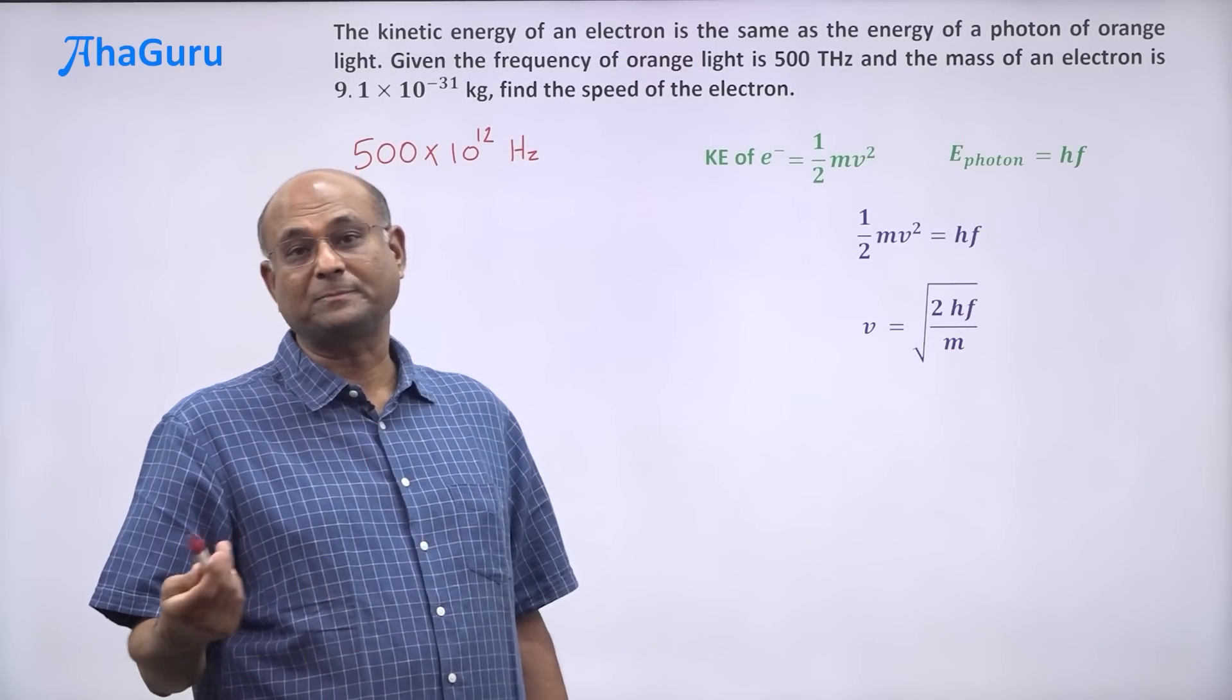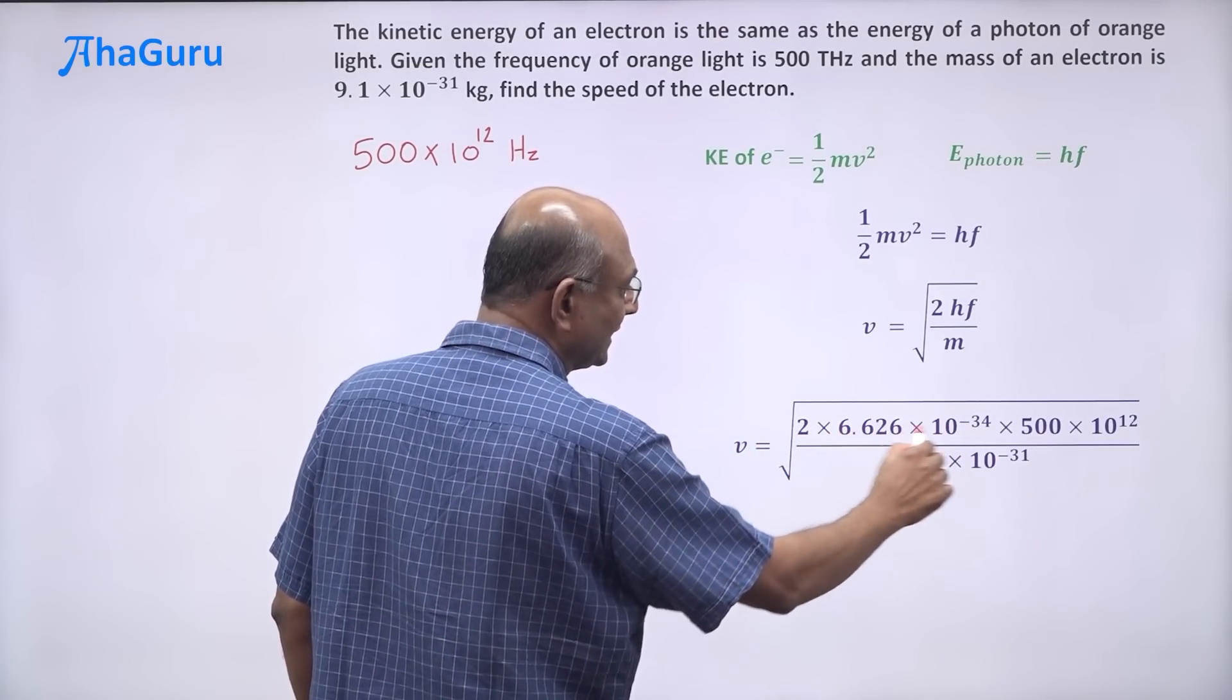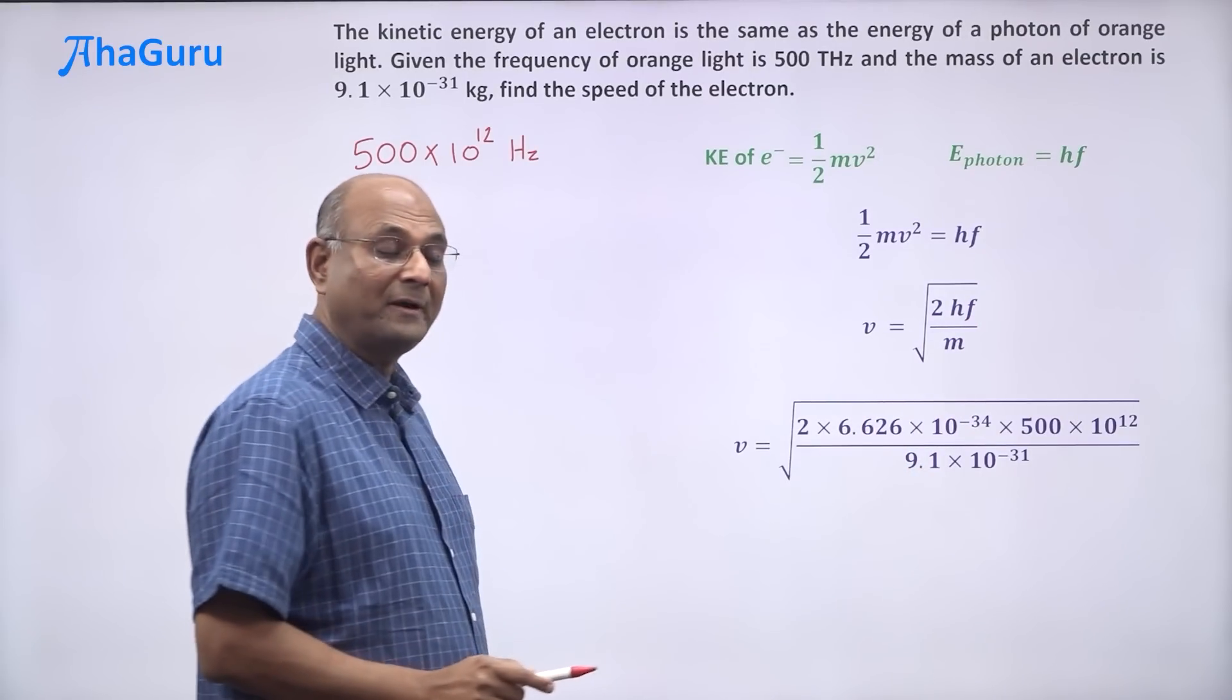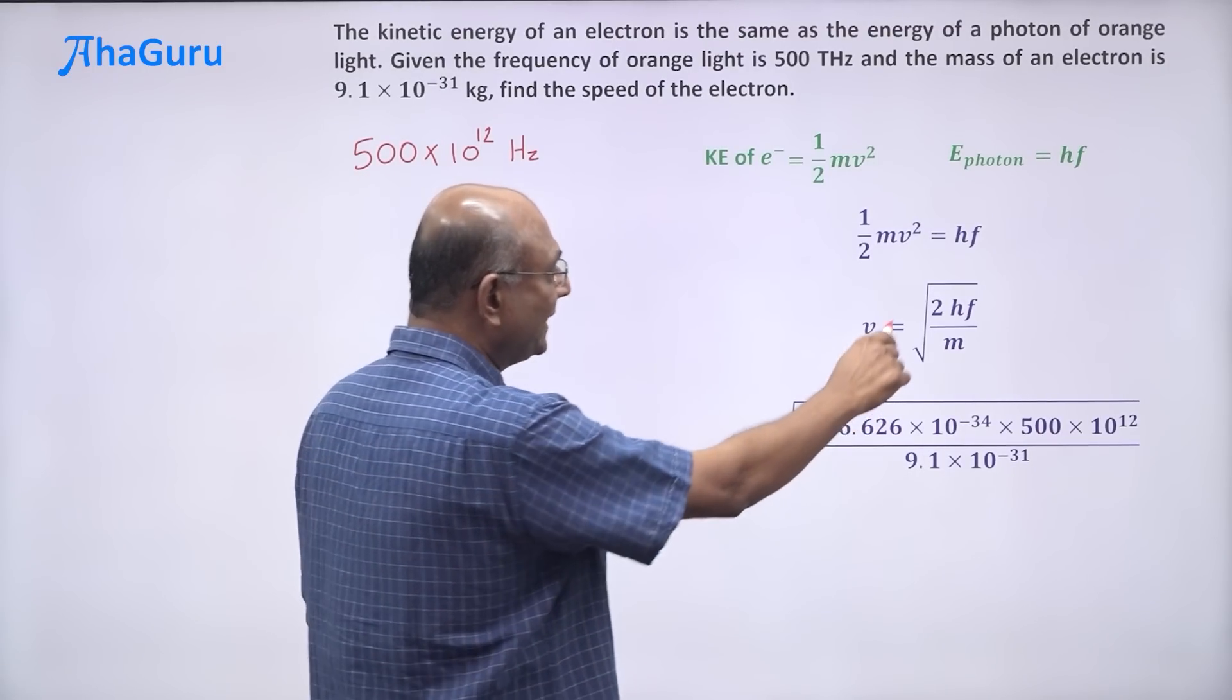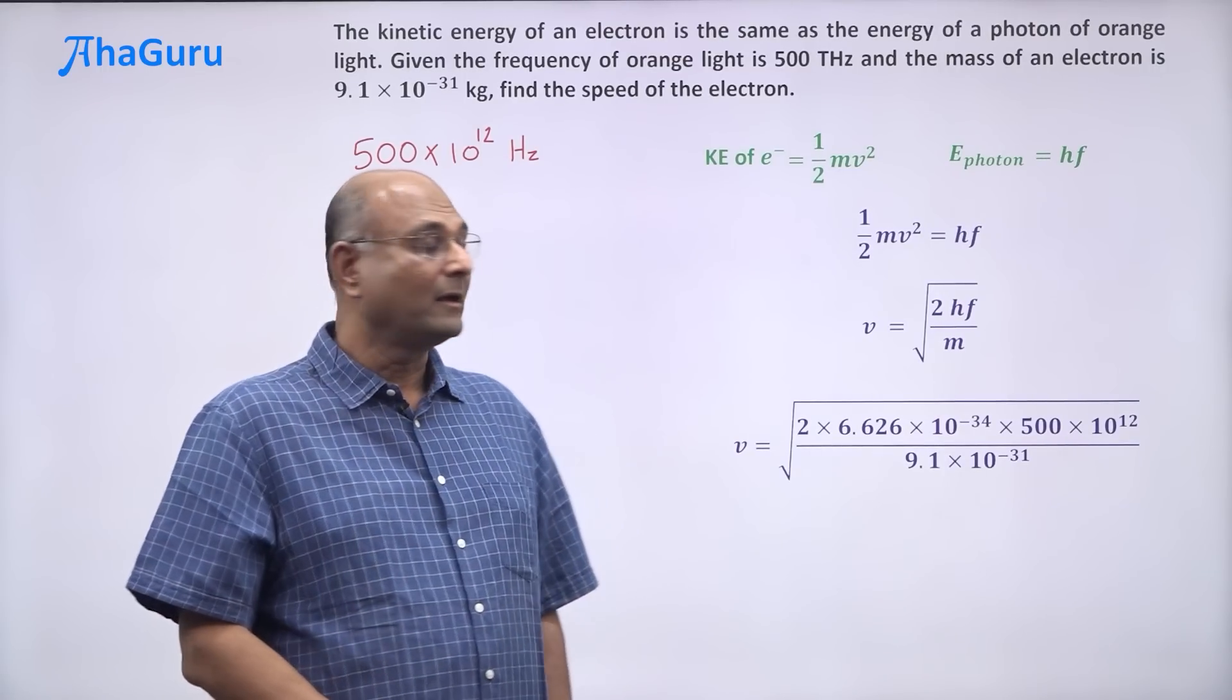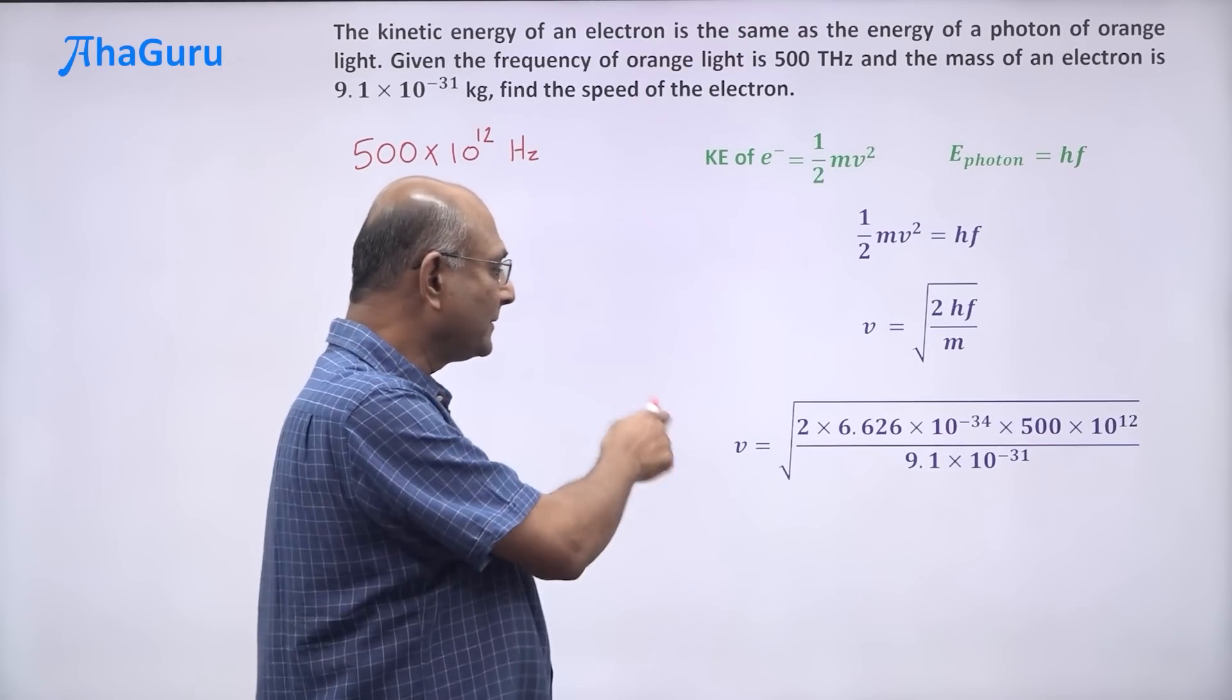Now we know all of the values, h is Planck's constant. So substituting, we can say v is equal to 2 times Planck's constant 6.626 × 10^-34 into f which is 500 tera, 500 × 10^12. Well, you have to always use SI units. Divided by the mass of the electron which is 9.1 × 10^-31. Since I have used SI units everywhere, when I calculate this number, the answer is also going to be in SI units which is meters per second.